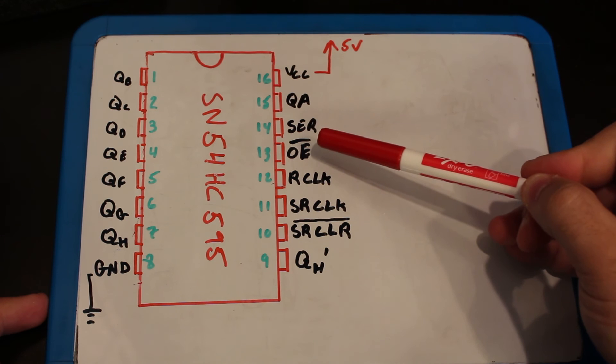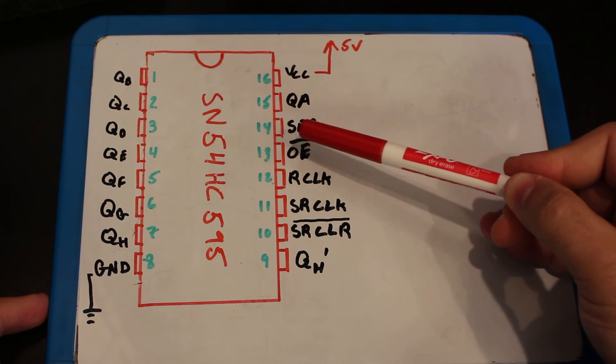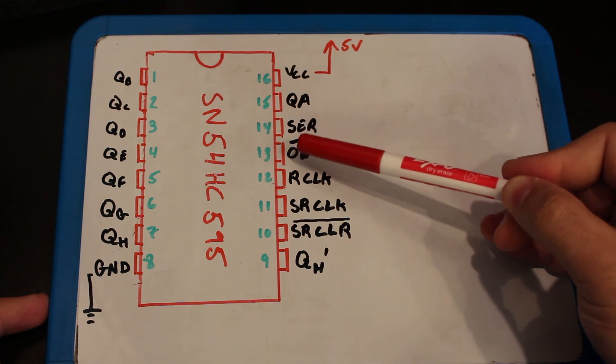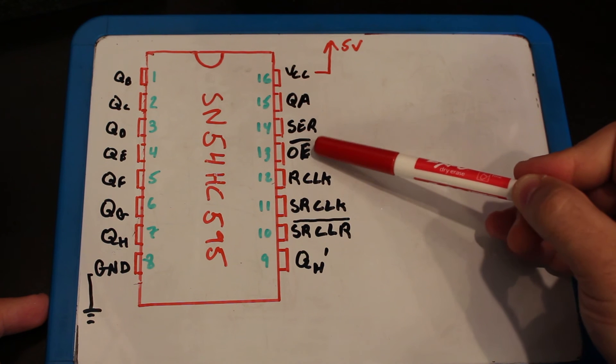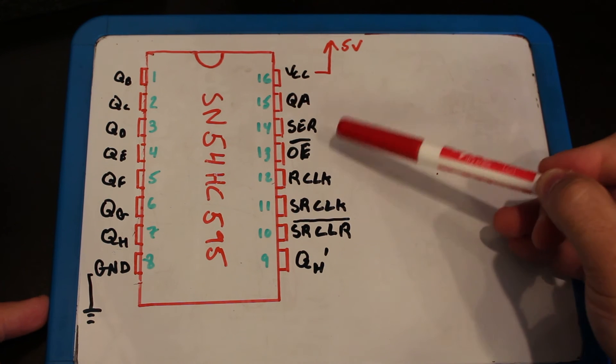The OE is the output enable. By default, or in order for it to be enabled, you want it to be low. Therefore most likely you will connect this one to ground directly.